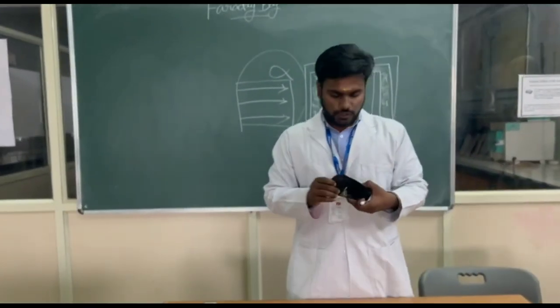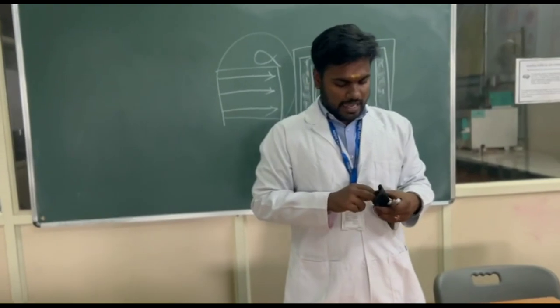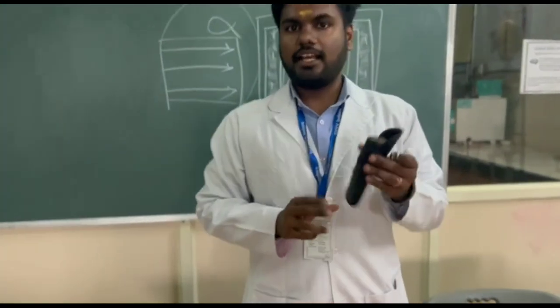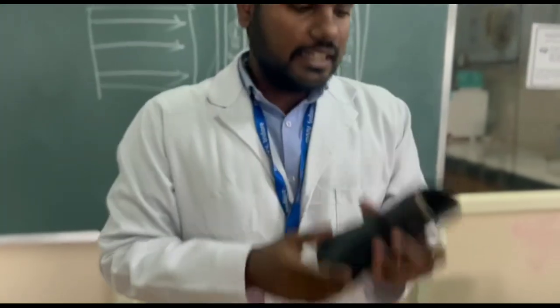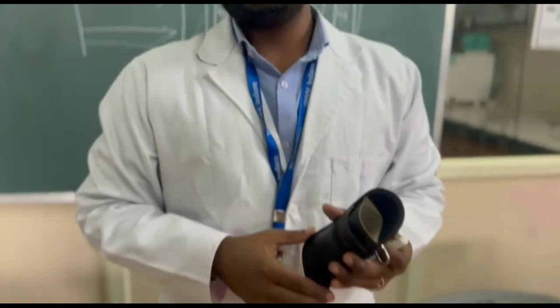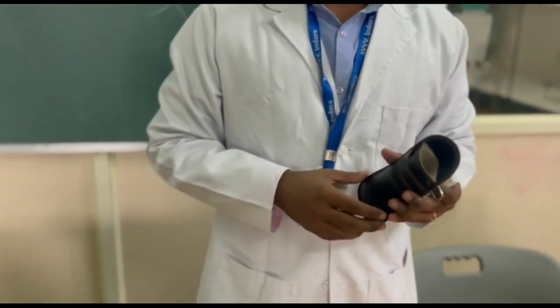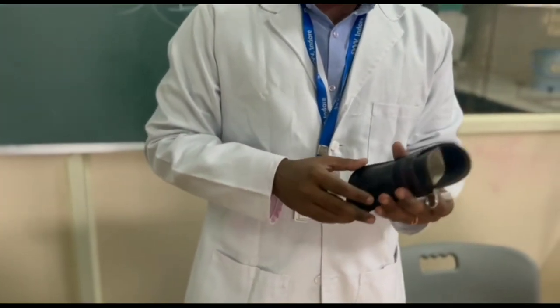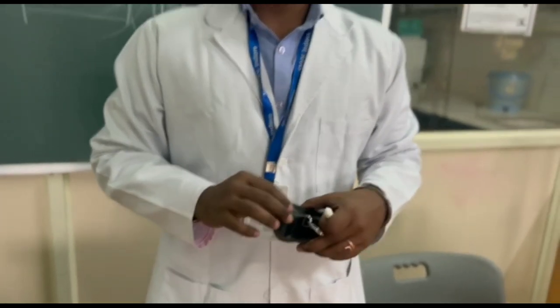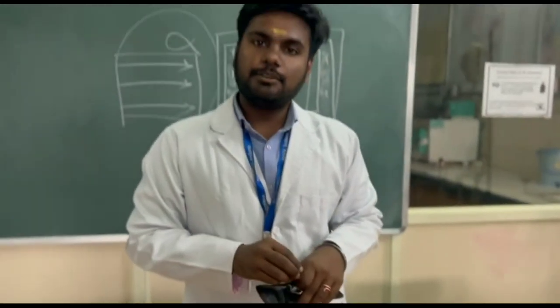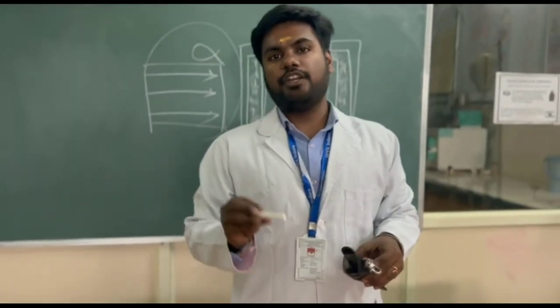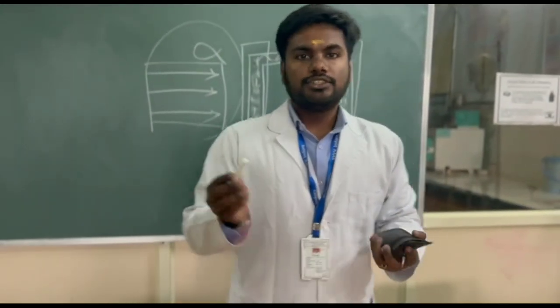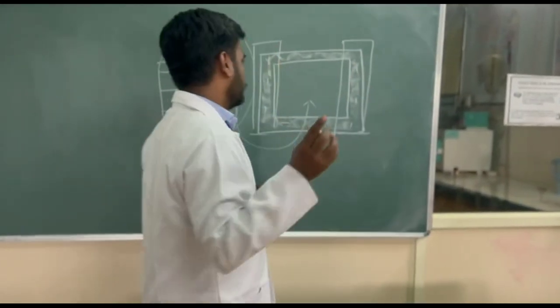This is the Faraday mat. When we look at it, it has metallic layers which consist of copper, nickel, aluminium, and static dissipative polythene.